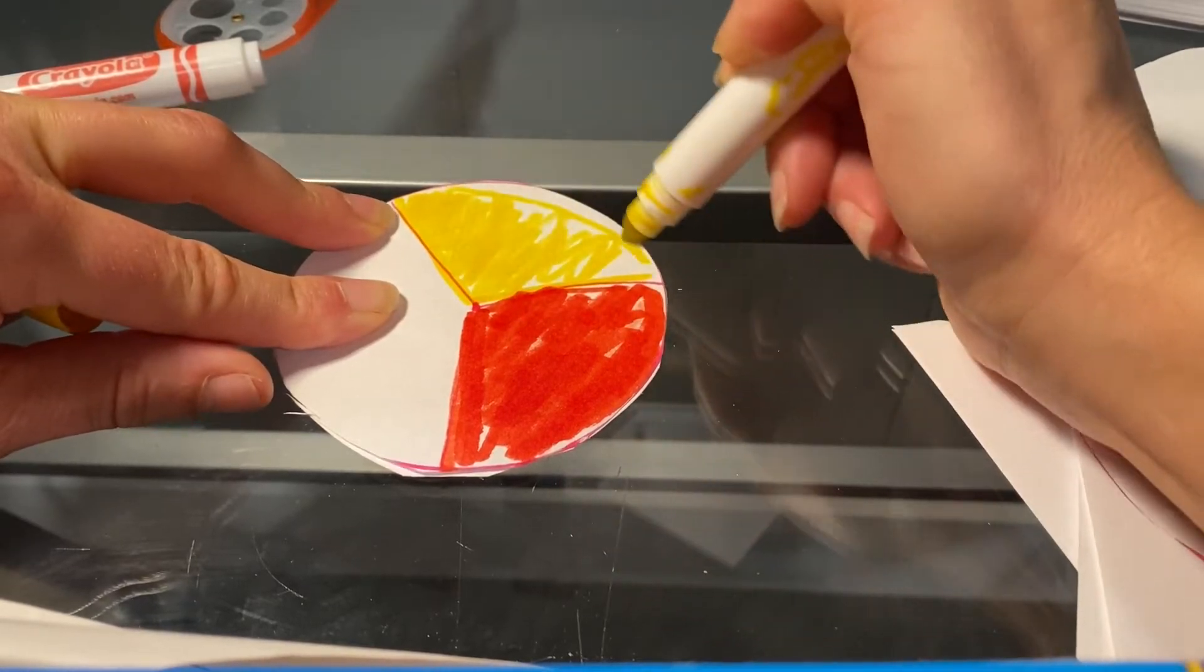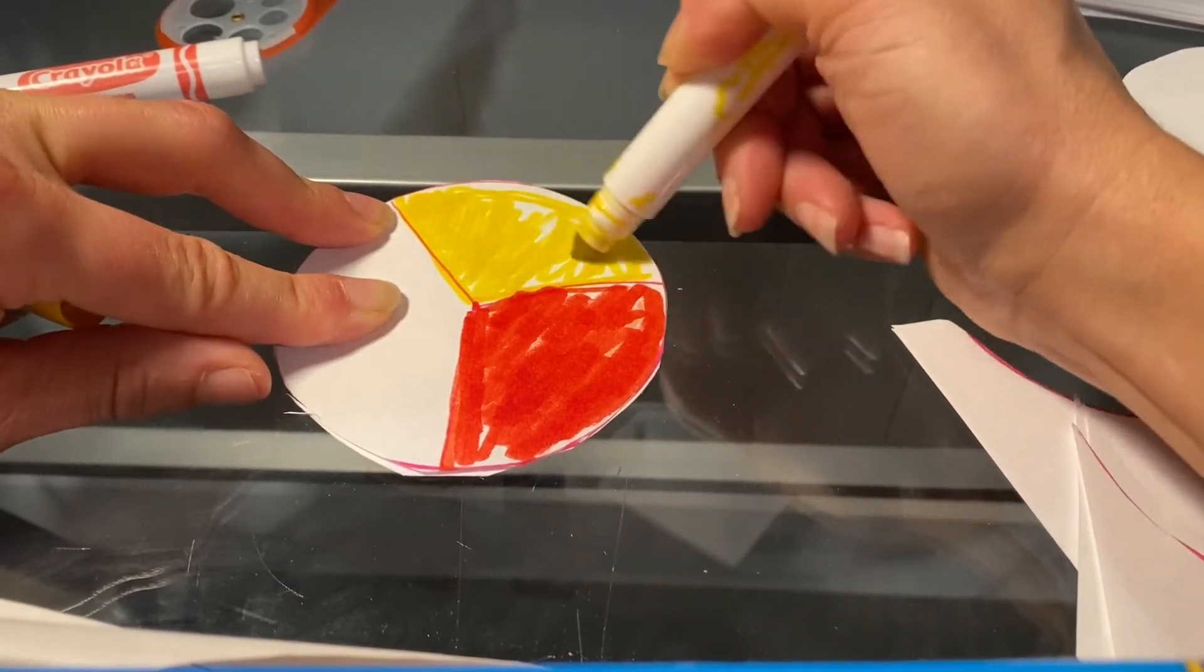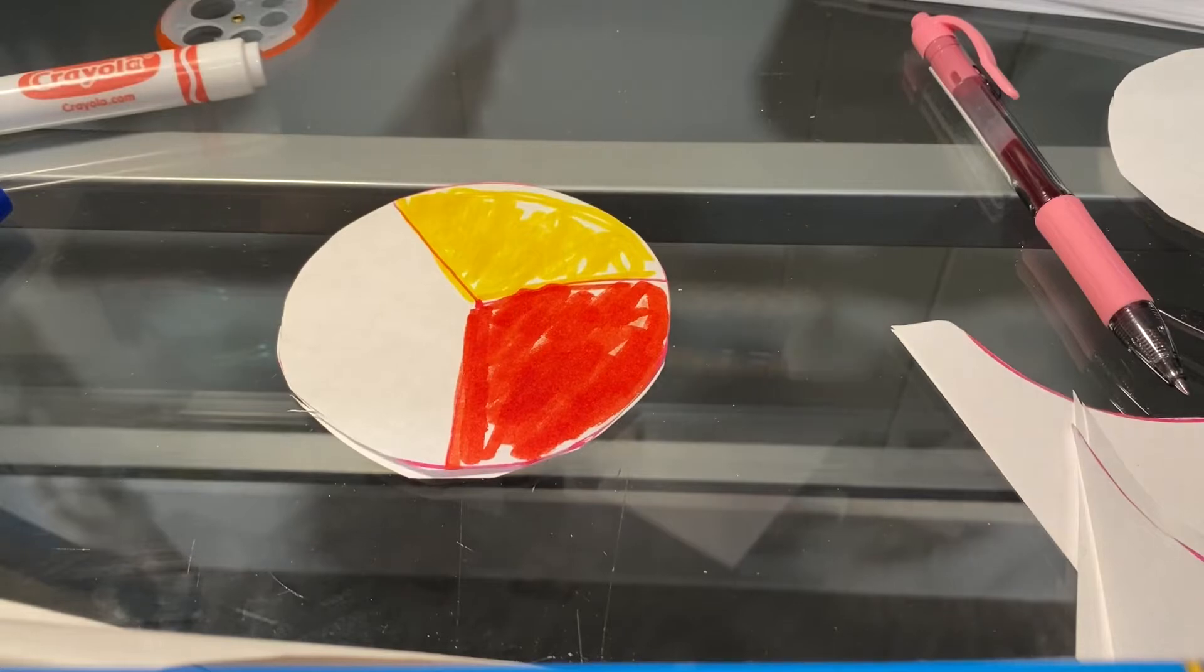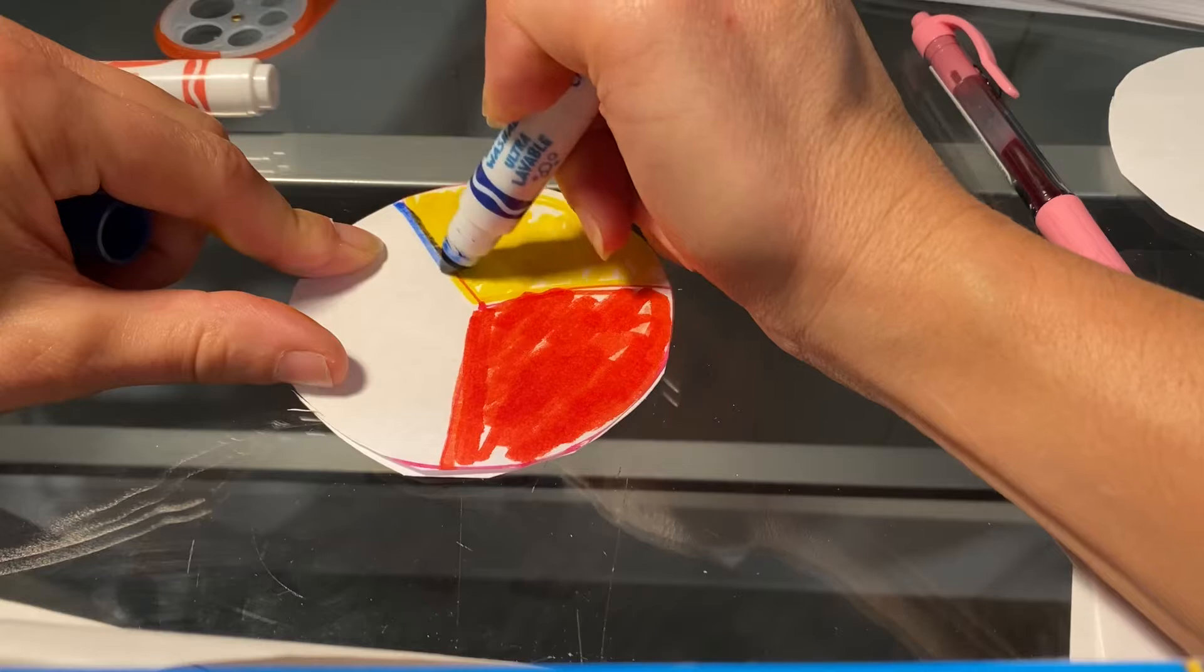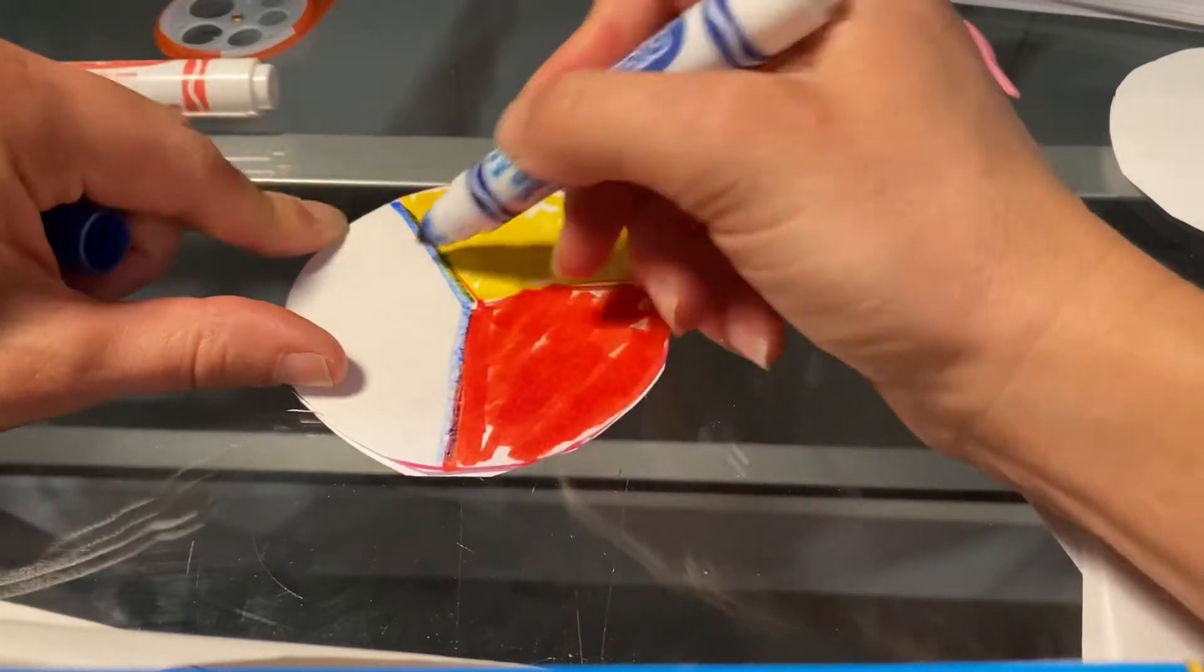Even better than I am. Color it nice and to the edge, trying to fill all that white space. And then the last section is going to be blue. All right, so you're going to color it blue.